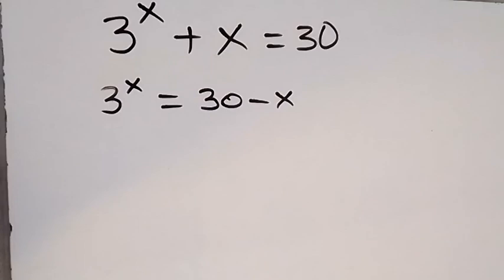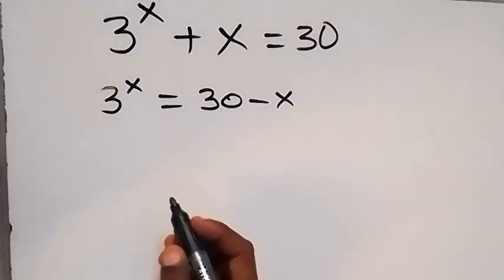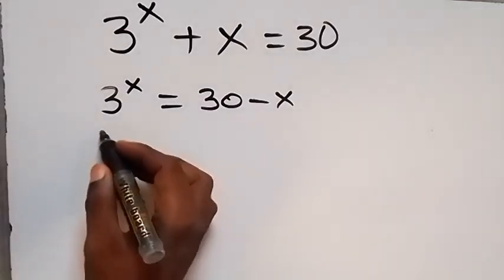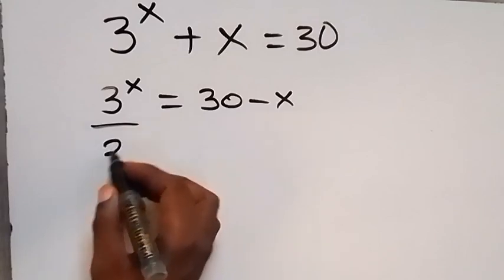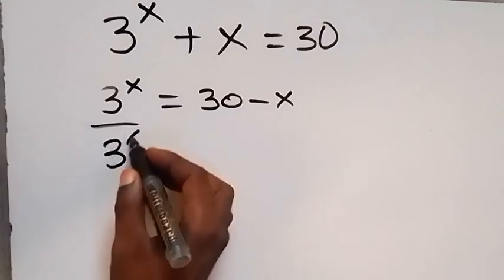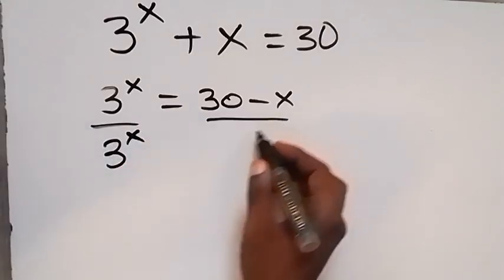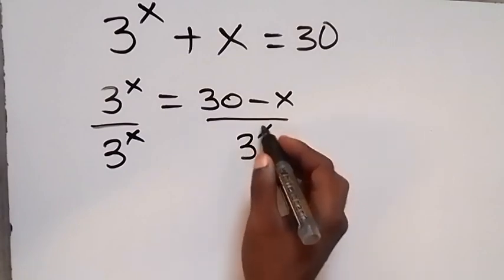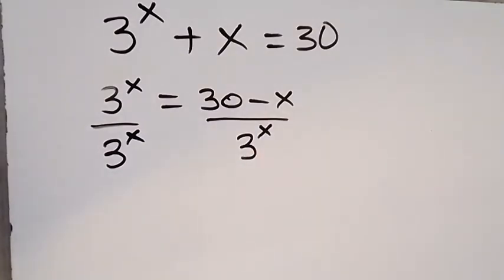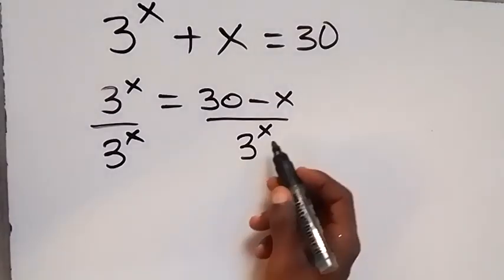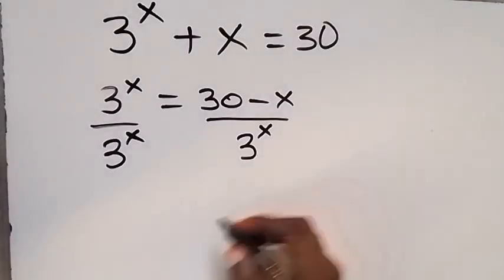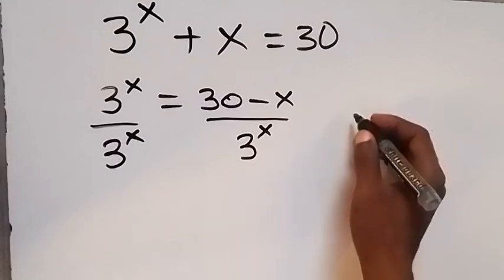From here, let's divide both sides by 3 raised to power x. On this side, divided by 3 raised to power x, and on this side as well. When 3 raised to power x cancels, we have 1. We can rewrite the other side as 1 over 3 raised to power x.